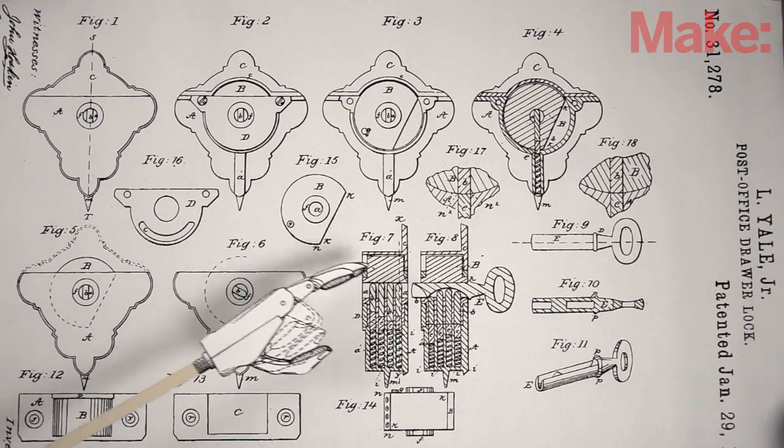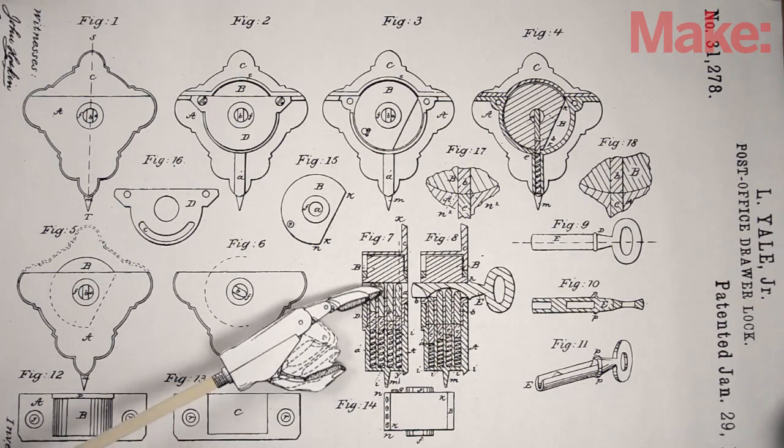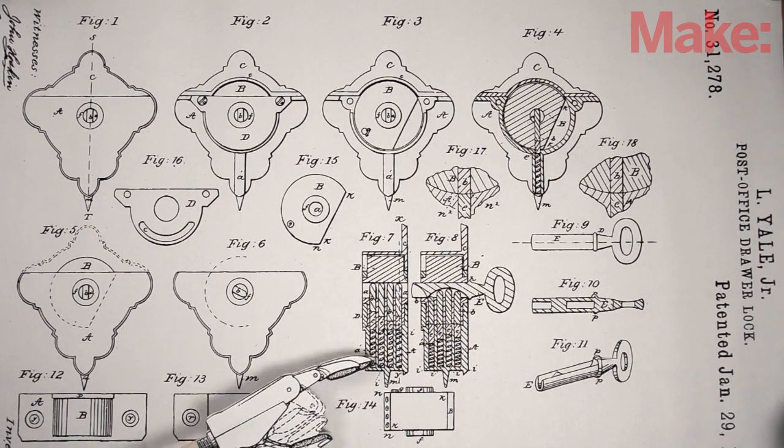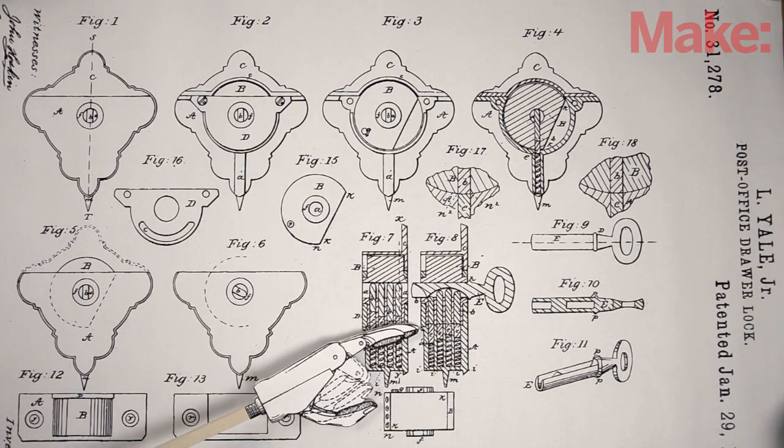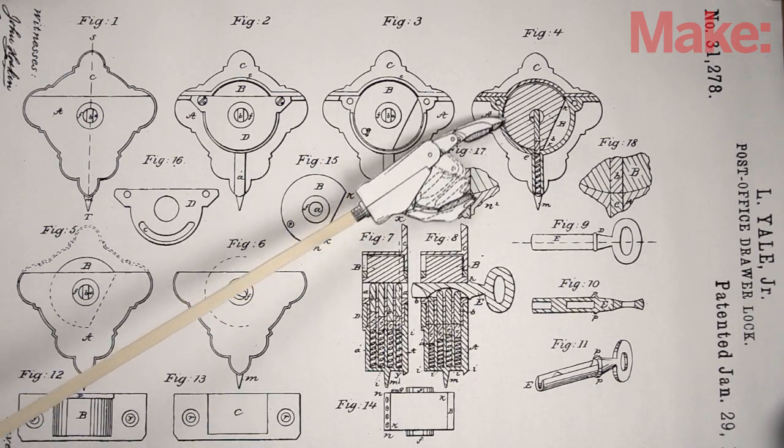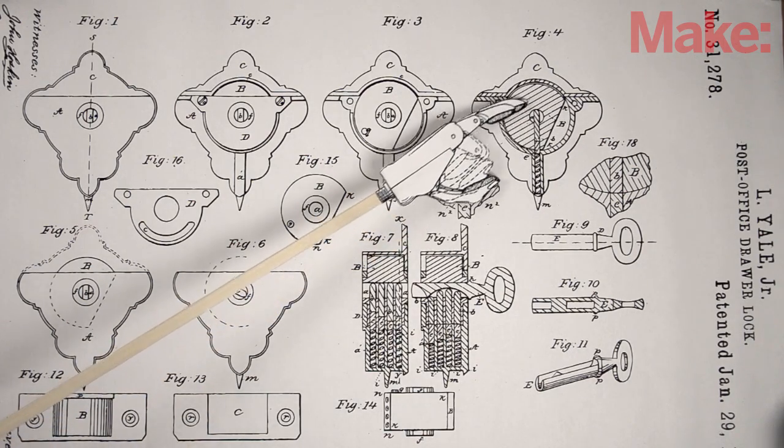The Pin Tumbler Lock gets its name from the pins that line the keyway. They're split in various locations, and springs hold them in place. When the right key is inserted, the pins align to put the split exactly between the plug in the center and the shell around the outside. When everything lines up, the plug can turn.